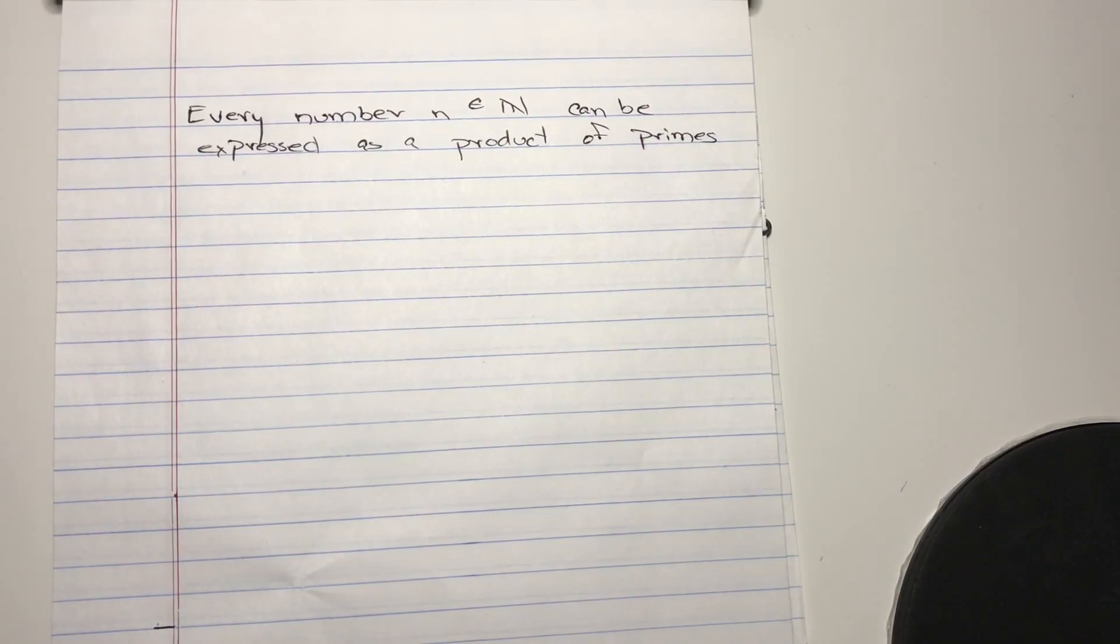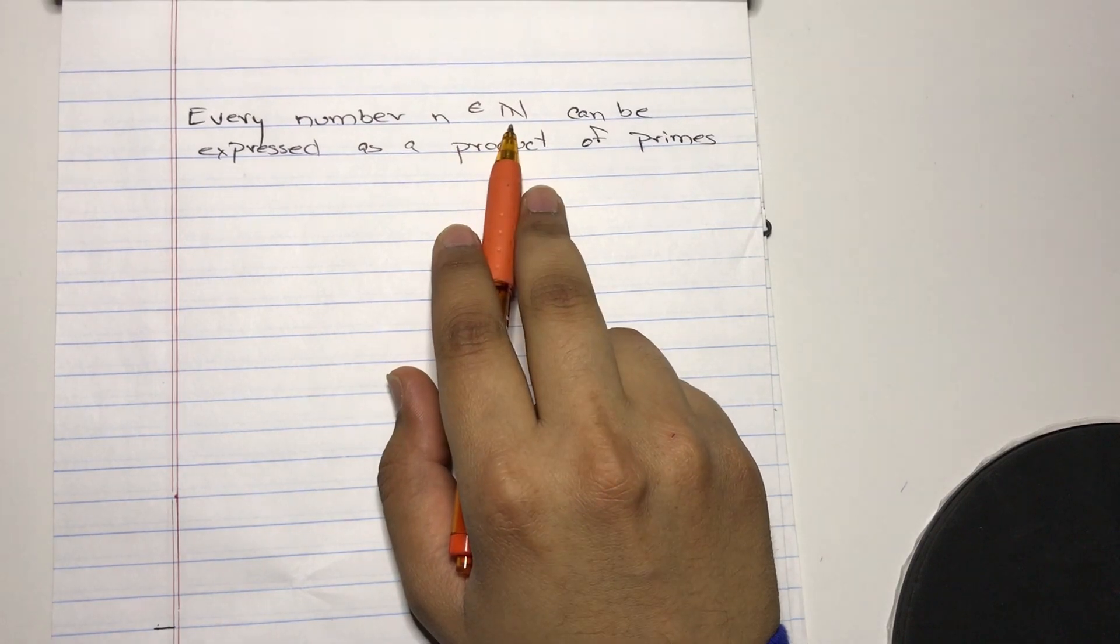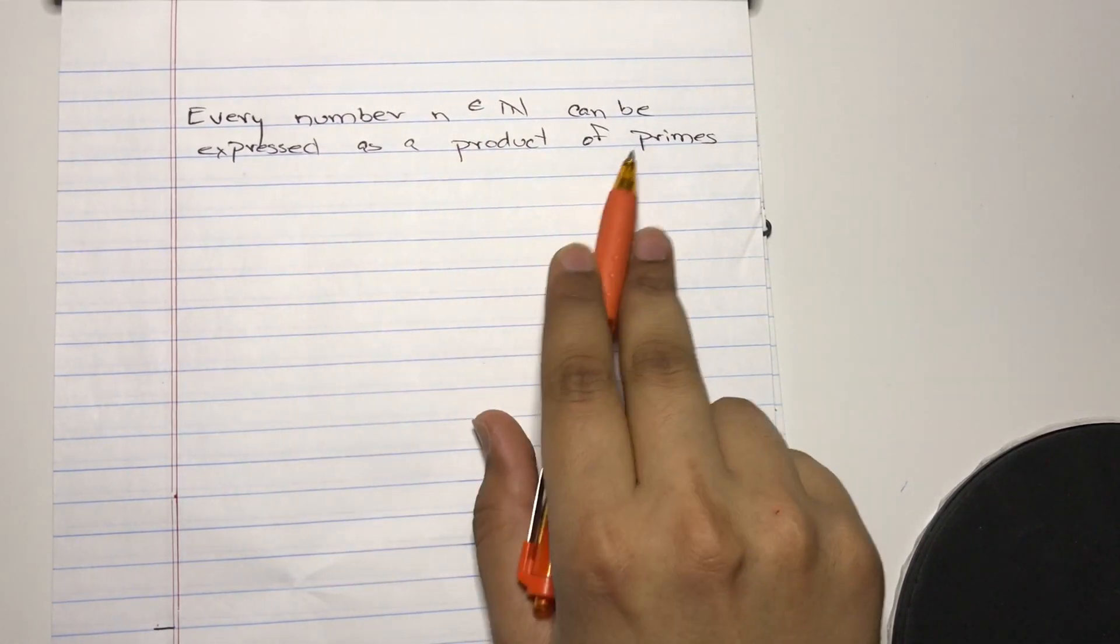Hello and welcome everybody. Today we're going to prove that every number n belonging to the set of natural numbers can be expressed as a product of primes.